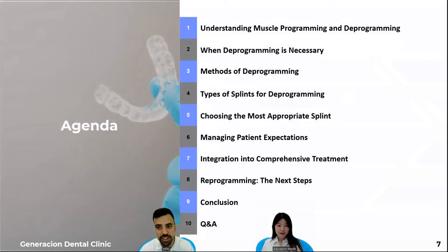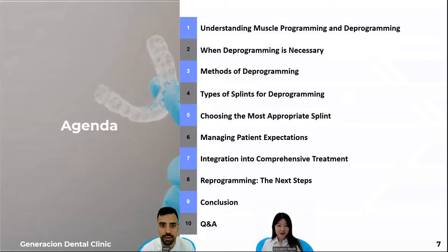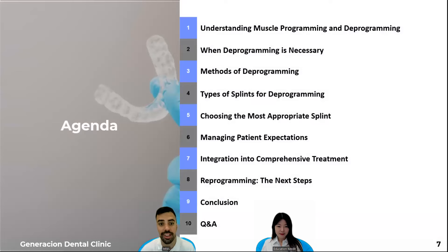Today I'm going to organize this as an agenda. We're going to understand what muscle deprogramming and reprogramming means, when it's important to do it or not, the methods to do it, and the types of splints we can use. Then we'll see which is the most appropriate splint in each case, how to manage patient expectations, and how to integrate this into a comprehensive treatment plan.